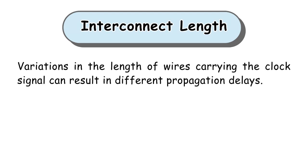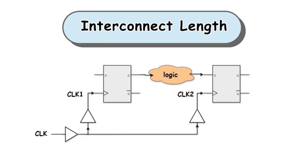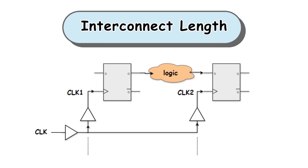First, the interconnect length. Variations in the length of wires carrying the clock signal can result in different propagation delays. Longer interconnects introduce more delay, causing the clock signal to arrive later at some components compared to others. As shown in the figure, the difference in interconnect length between clock 1 and clock 2 will lead to difference in arrival time of the clock signals at their flip-flops.